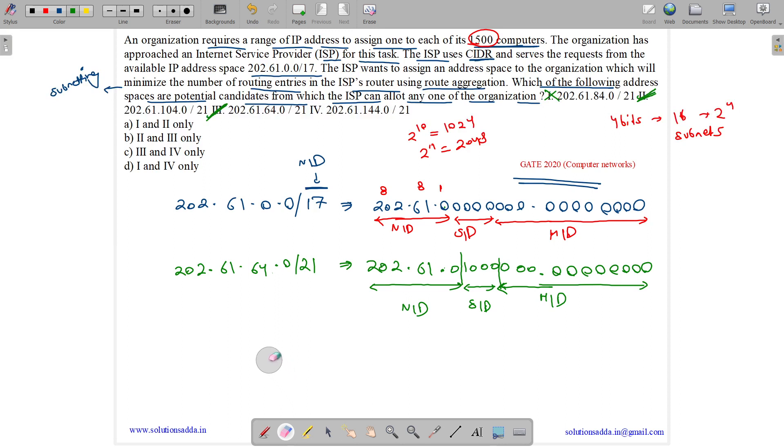Now let us see option D. Option D is 202.61.144/21. So we need to write the binary equivalent for 144. 144 can be written as 10010000. So these are our host ID, all zeros. These are our subnet ID, perfect. But see here, host ID should have this 17th bit as 0 for network ID. And here network ID 17th bit is 1. So network ID is not matching. So option D is false.